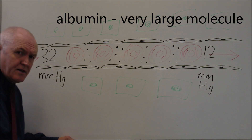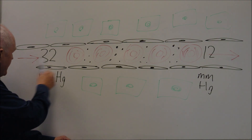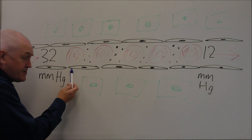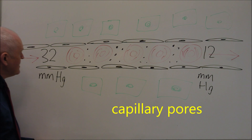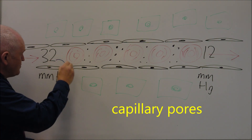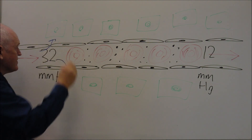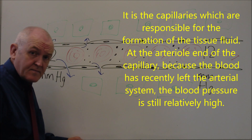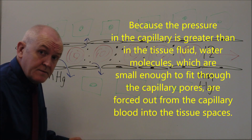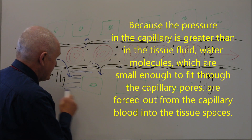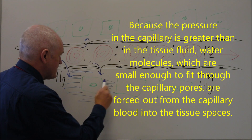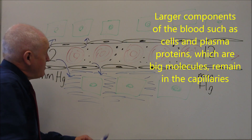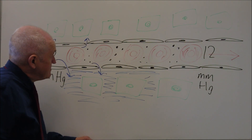At the arterial end of the capillary the blood is coming in at relatively high pressure, and there are small gaps between the individual capillary endothelial cells. Because the blood is at fairly high pressure, water molecules are pushed out from the plasma into the interstitial spaces — the tissue spaces. This leads to the accumulation of tissue fluid, or interstitial fluid. At any one time the body has about 5 liters of blood but 10 liters of tissue fluid.